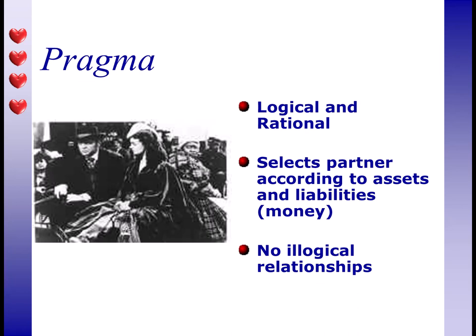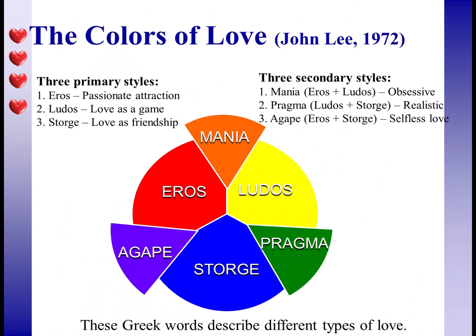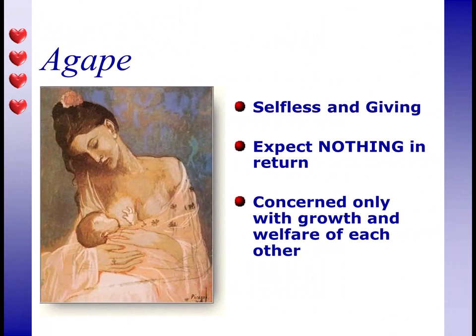Between ludus and storge we find pragma — the type of love that's logical and rational. It fits the exchange theory of mate selection, which says that everyone has social capital: attributes that are valued, like wealth, beauty, family background, or personality. Exchange theory says that love and marriage are most likely to occur when both parties perceive a similar amount of contributed and received resources. Finally, agape is a selfless and giving type of love that is unconditional and doesn't expect reciprocation.